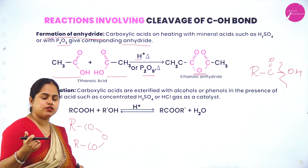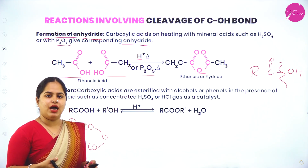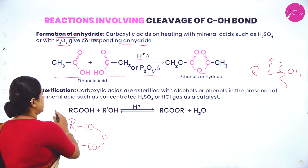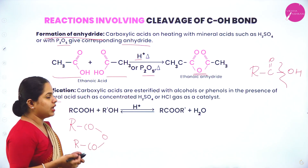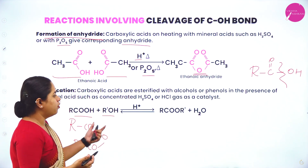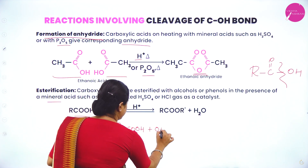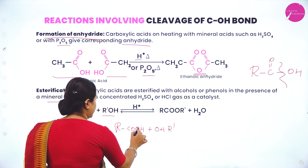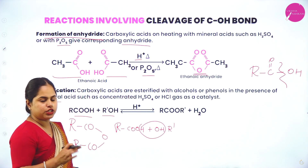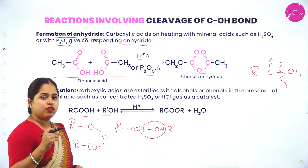Esterification: carboxylic acids are esterified with alcohols or phenols in the presence of a mineral acid such as concentrated H₂SO₄ or HCl gas as catalyst. RCOOH reacts with R'OH to give ester RCOOR' and water is removed. This is a reversible reaction. The ester has a characteristic smell — ester formation is another test to identify carboxylic acid, alongside the sodium bicarbonate test.